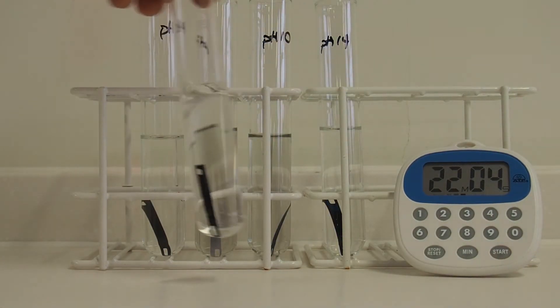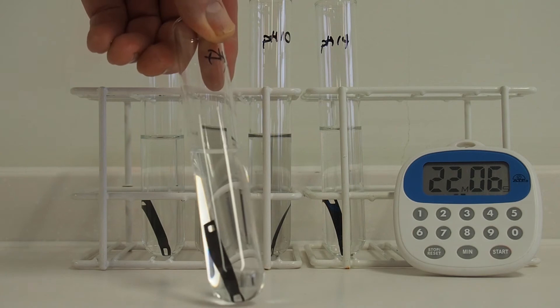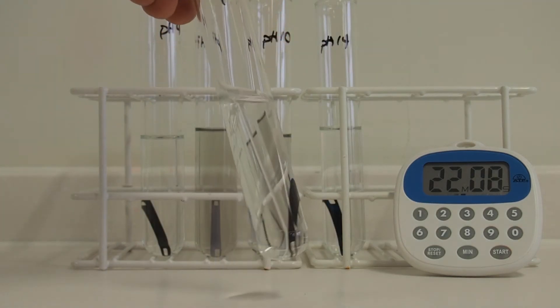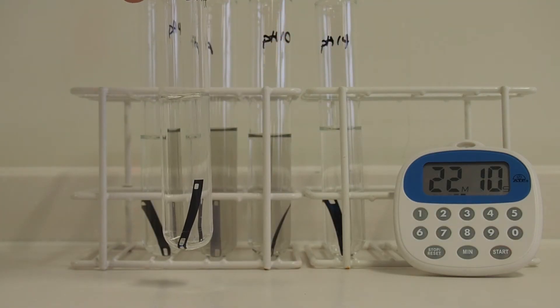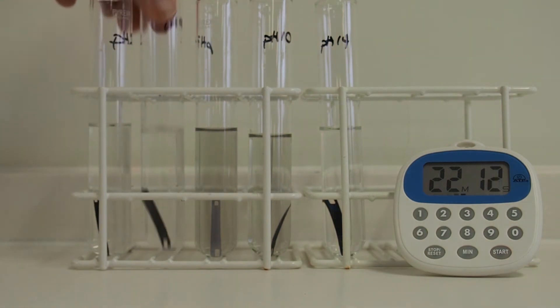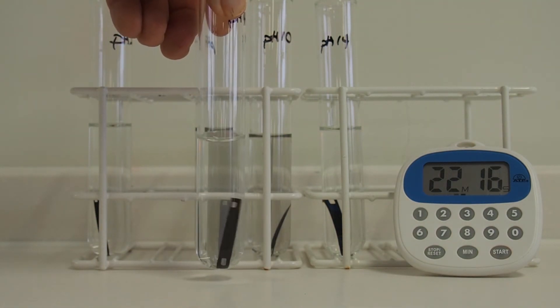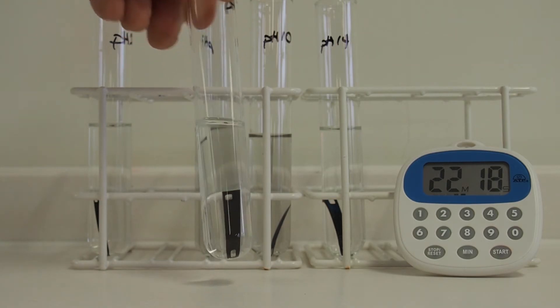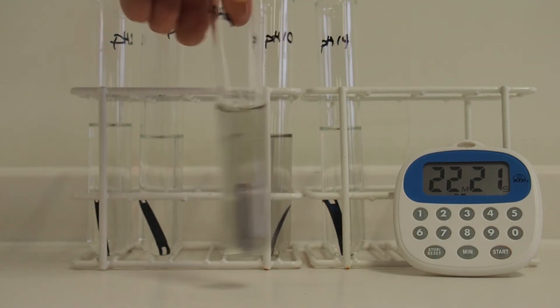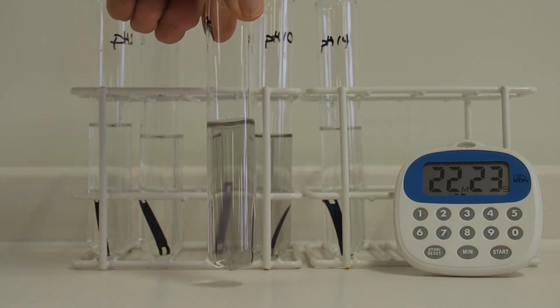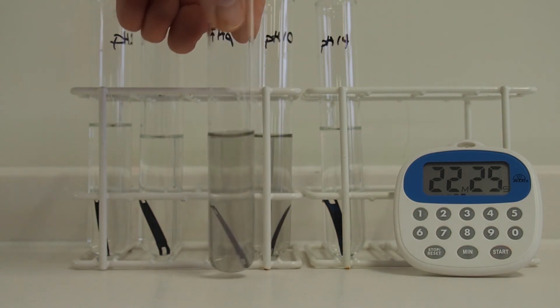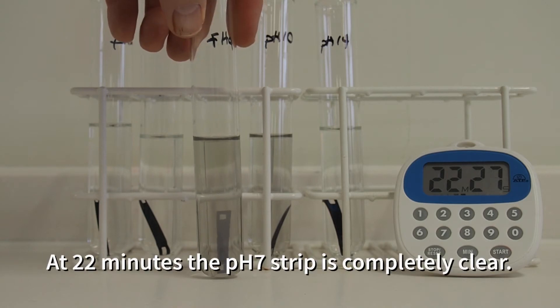After 22 minutes the pH 1 strip is still completely black. The pH 4 strip also appears to be completely black. By comparison, the pH 7 strip has now actually gone clear and that's finished. That's as far as that will go.